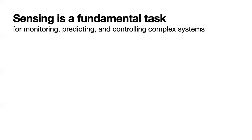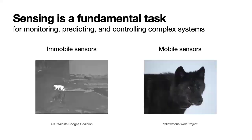How do we measure our system? In my research, I distinguish measurements into two different types of sensors — either immobile or mobile. A stationary or immobile sensor is fixed in a specific location and doesn't change its position during operation. For example, the I-90 Wildlife Coalition has infrared cameras placed under bridges or over overpasses along I-90 to monitor wildlife movement, such as a cougar they spotted in the Central Cascades. A mobile sensor, as you can imagine, moves during its operation — for example, the Yellowstone Wolf Project attaches GPS collars to wolves to monitor population dynamics, predator-prey interactions, or social behavior.